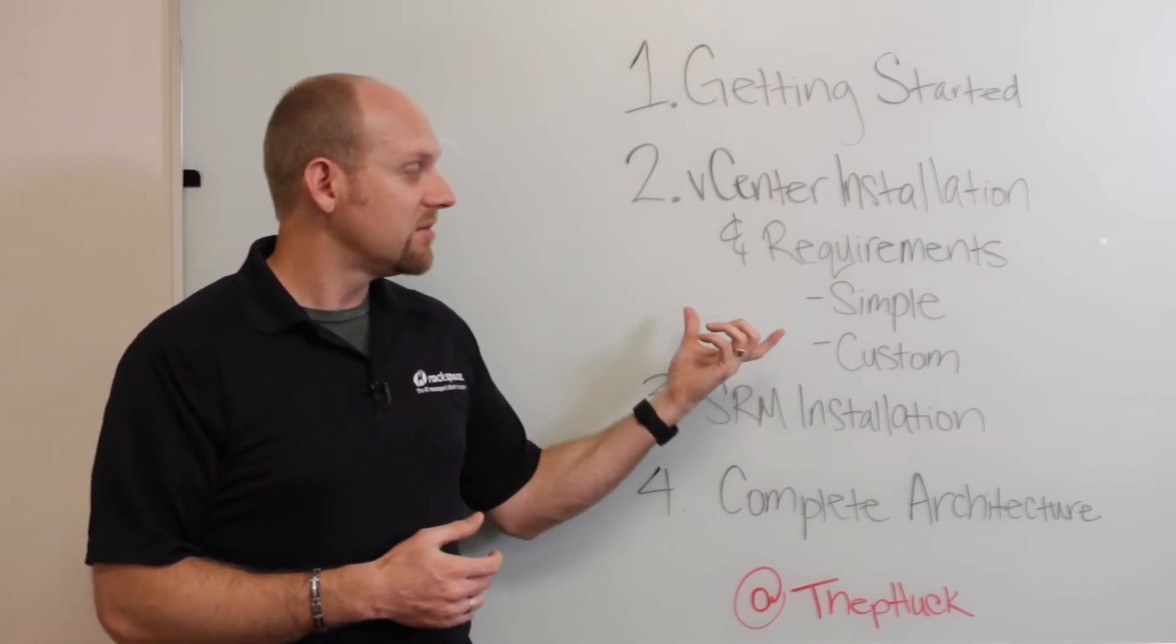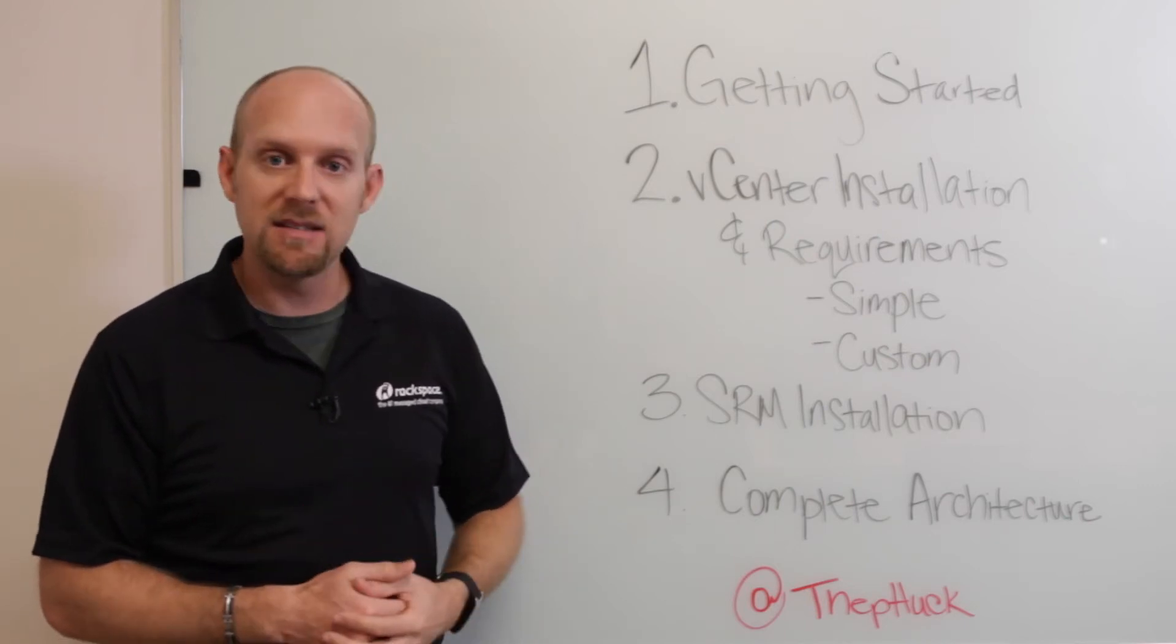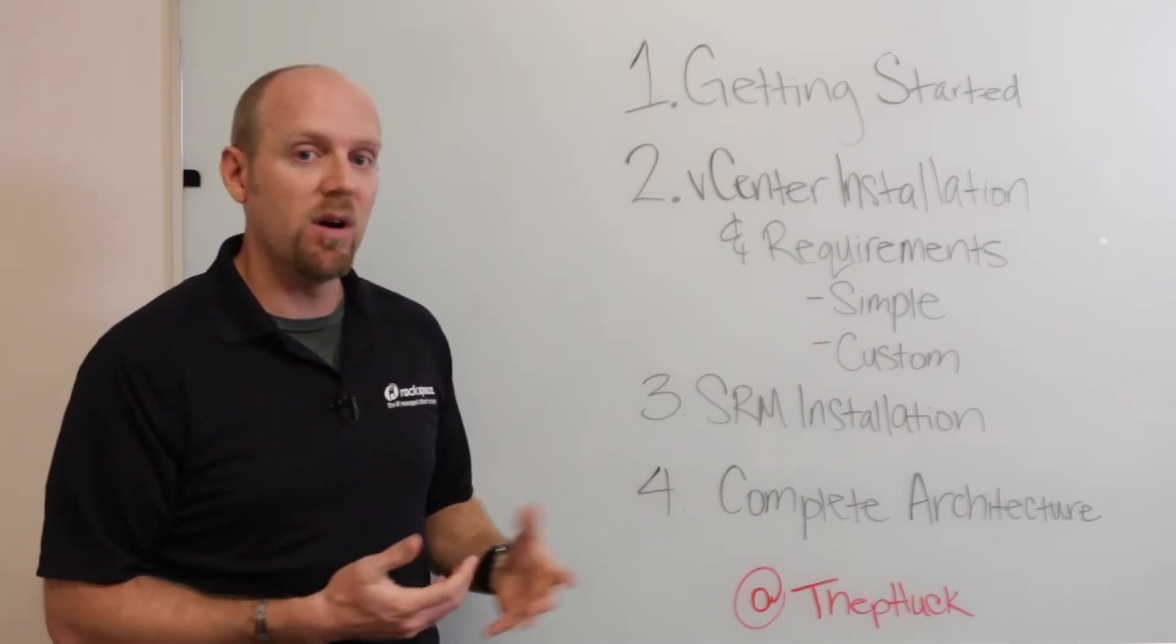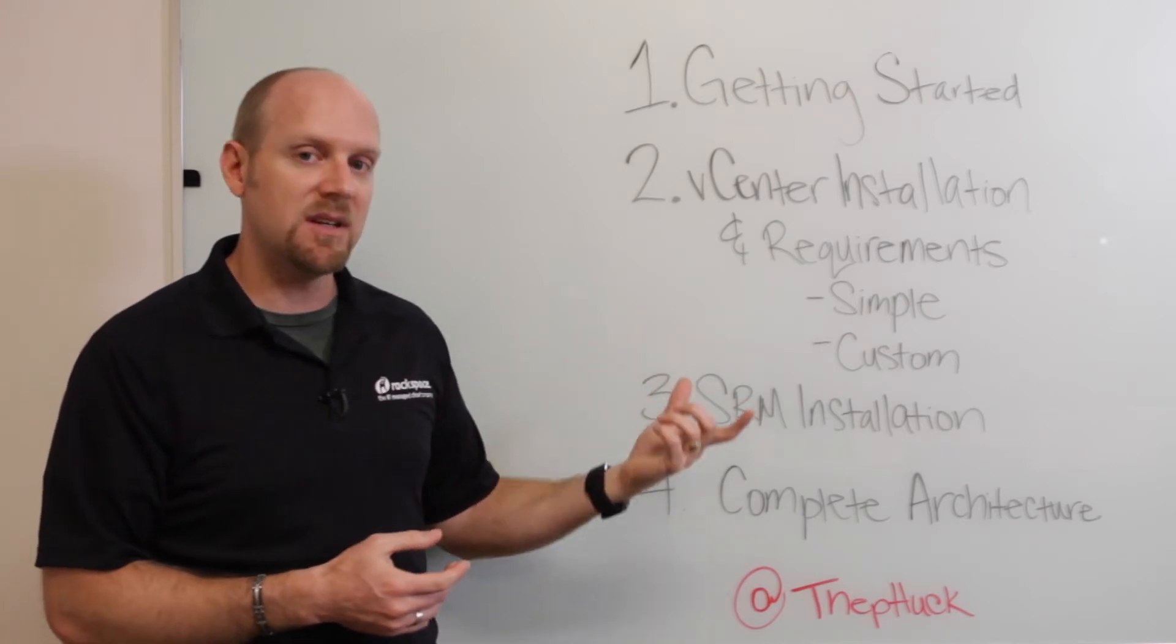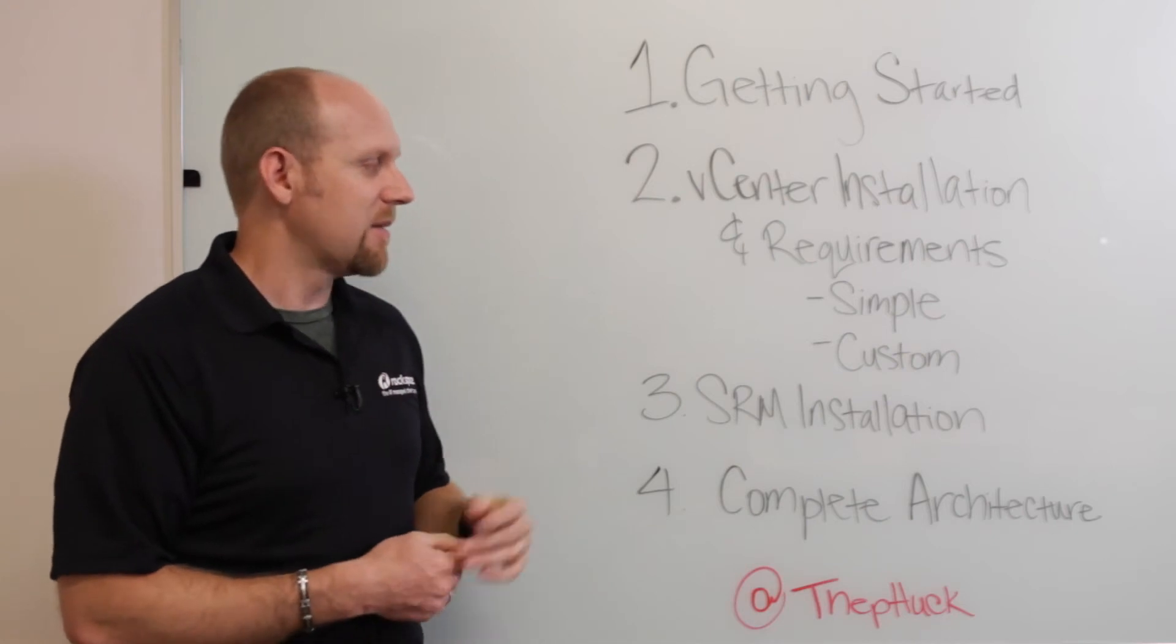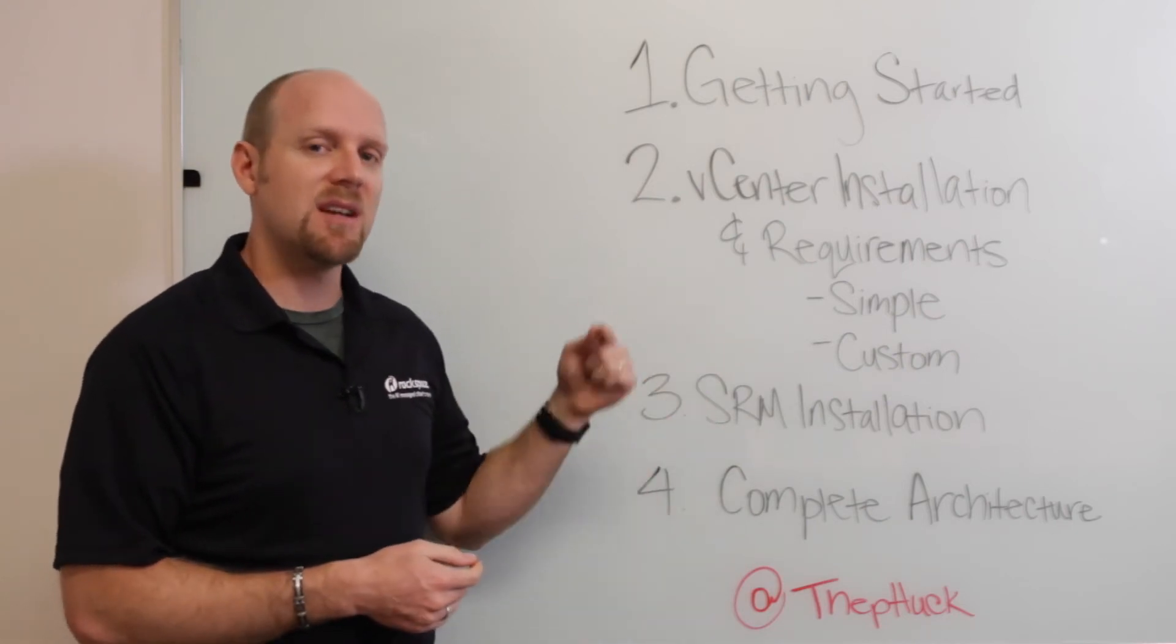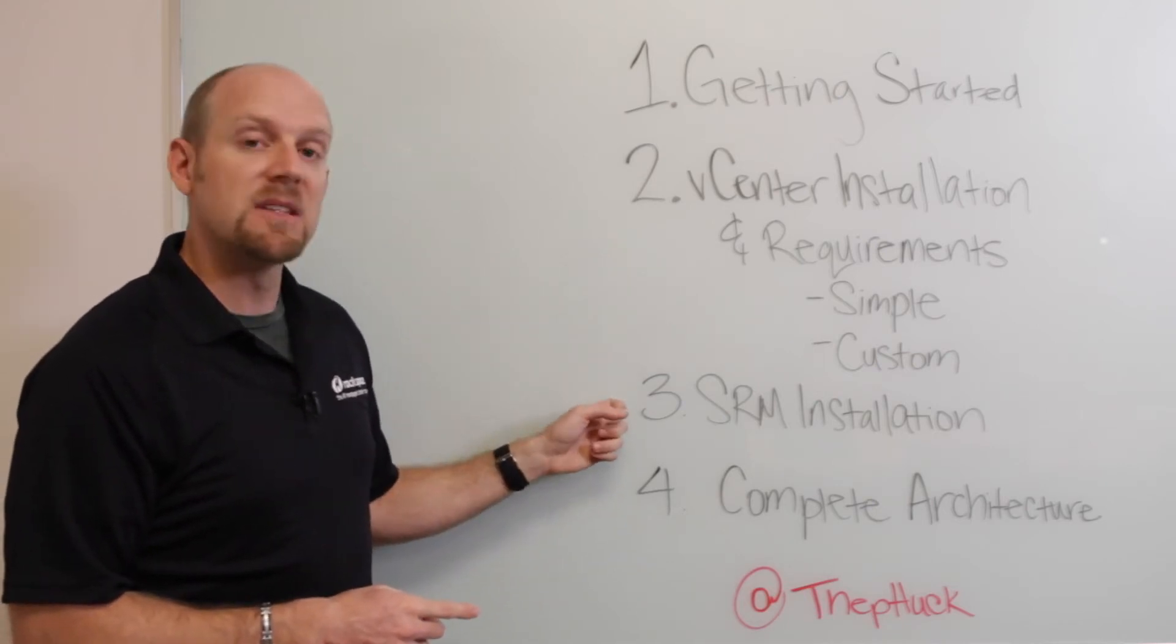There's also the option to go to the appliance. The appliance is a great tool. It deploys very easily and it works. It supports 100 hosts and 3000 VMs, which for most people will work just fine. The problem is you still need a separate Windows VM for SRM and VUM, which ties into my SRM installation.